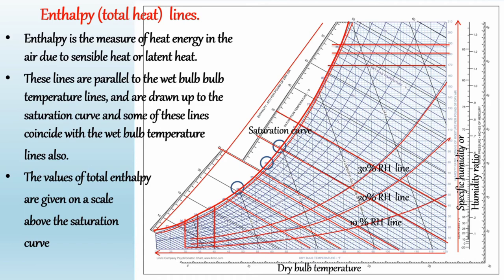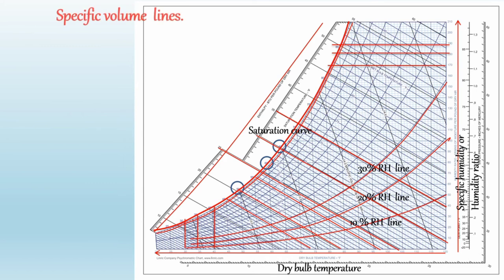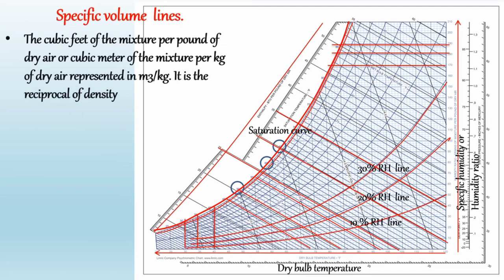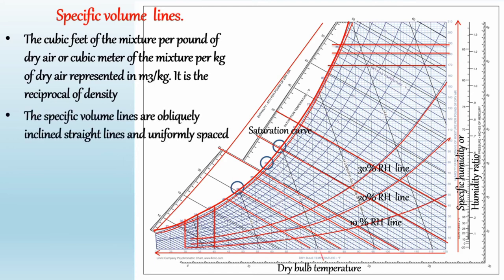The next line is the specific volume line. Specific volume represents cubic feet of the mixture per pound of dry air, or cubic meters of the mixture per kilogram of dry air, represented in meter cubed per kilogram. It is the reciprocal of density. In the psychometric chart, the specific volume lines are obliquely inclined straight lines and uniformly spaced. These lines are drawn up to the saturation curve.